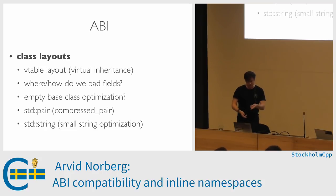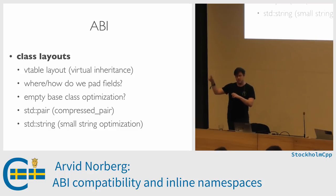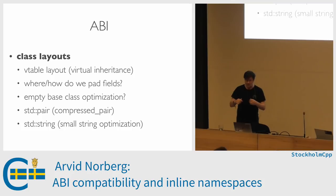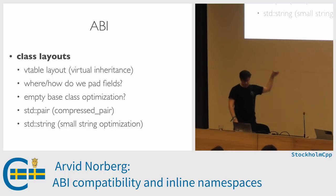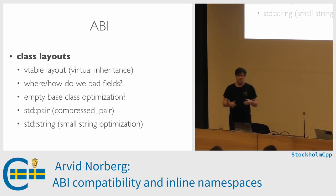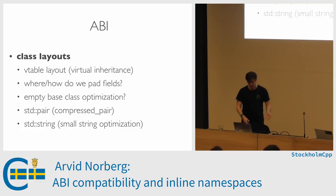How are fields padded? The empty base class optimization means that if you derive from a class that doesn't have any fields, there's an optimization where it won't actually take any space. Normally, empty objects still need to take at least one byte because you're not allowed to have a different object at the same address. This extends all the way up to the standard library — for instance, std::pair. Some implementations use a compressed pair that takes advantage of empty base class optimization. Similarly, std::string has the small string optimization, which has several different ways of implementing.